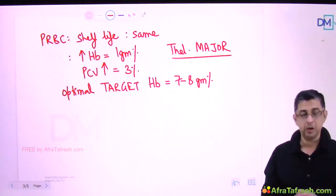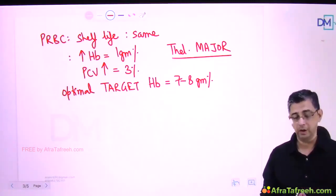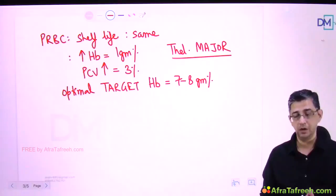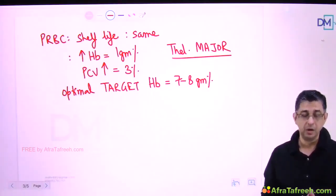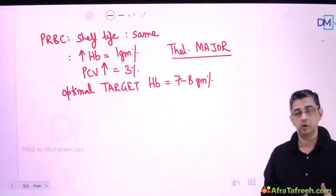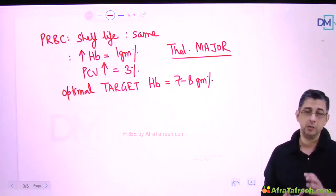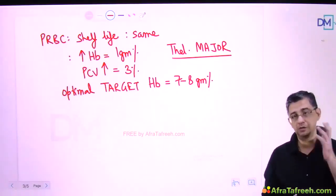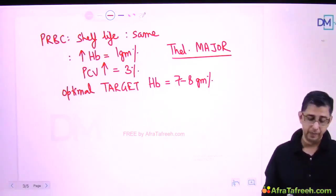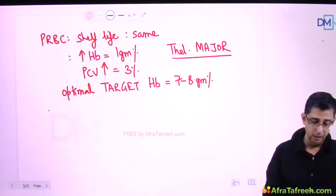The optimal target hemoglobin to achieve after giving packed RBCs is seven to eight grams percent, because this will reduce or prevent critical ischemia which can cause myocardial infarction or endocardial ischemia. For example, an AML patient with severe anemia due to excessive bleeding - the optimal target hemoglobin of seven to eight gram percent will at least prevent critical ischemia affecting the brain or heart.